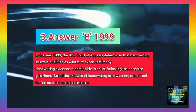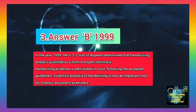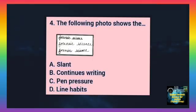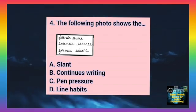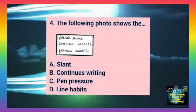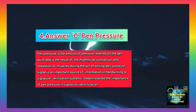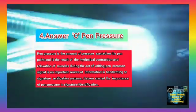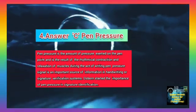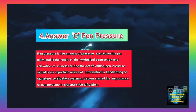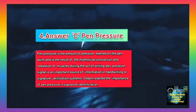Handwriting evidence is admissible in court. Following the acceptance guidelines, scientific analysis of handwriting is now an important tool for forensic document examiners. Question number 4. The following photo shows — Option A: Slant. Option B: Continuous writing. Option C: Pen pressure. Option D: Line habits. The correct answer is C, pen pressure. Pen pressure is the amount of pressure exerted on the pen point, and the rhythmical contraction and relaxation of the muscles during writing makes pen pressure an important source of information in handwriting or signature verification. Osborne stated the importance of pen pressure in signature identification.